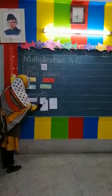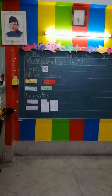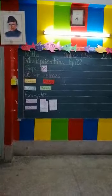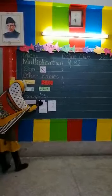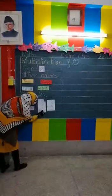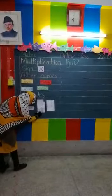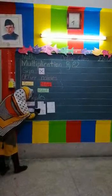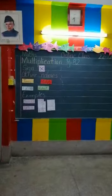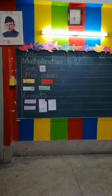2 5s are — yes, 10. अब 10 को लिखना कैसे है? 10 is a 2-digit number, तो 10 का 1 जो है, वो 10s के house में आ जाएगा, and 0 in the house of 1s. This answer is called product. 2 multiply 5 is equal to 10 — 2 5s are 10.